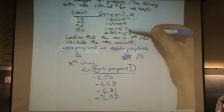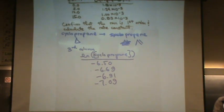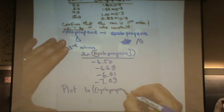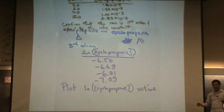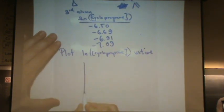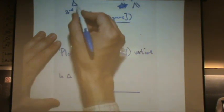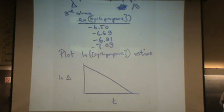So I'm taking the natural log of all four of those numbers right now, making kind of a third column in my table. And now, I will plot the natural log of cyclopropane versus time. Now, if that gives me a line with a negative slope, then it's first order.